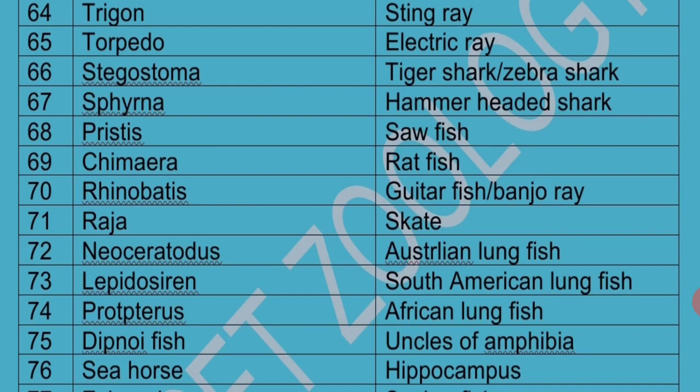Neoceratodus, Lepidosiren and Protopterus are collectively called Dipnoi fishes or Lungfishes. They exhibit discontinuous distribution: Neoceratodus is the Australian Lungfish, Lepidosiren is the South American Lungfish, and Protopterus is the African Lungfish. Dipnoi fishes are also called Uncles of Amphibia — a term given by Romer.